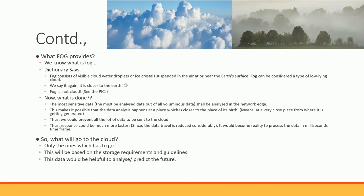In fog computing, the most sensitive data generated from sensors across the IoT environment shall be analyzed at the edge — the network edge which is very close to you — then going to the fog. This means data analysis happens at the place very close to its origin. There are three layers: layer one is the data generation layer, layer two is the fog layer, and layer three is the cloud. Layer two is very close to the data generation area and takes very little time to reach.